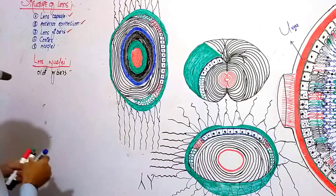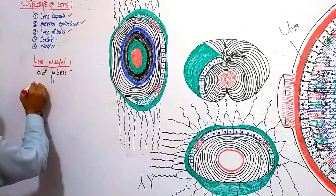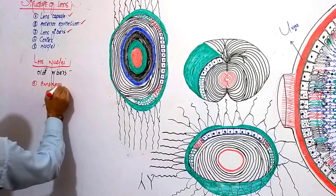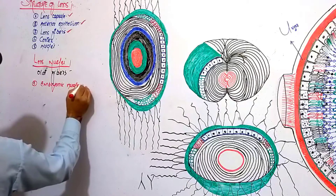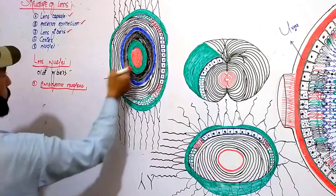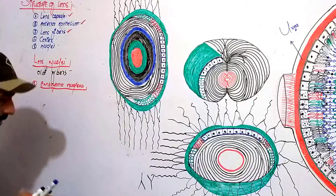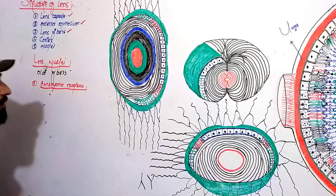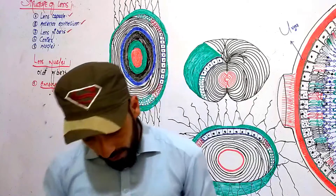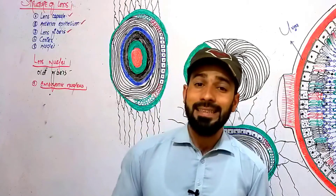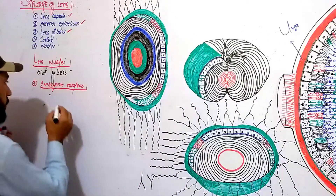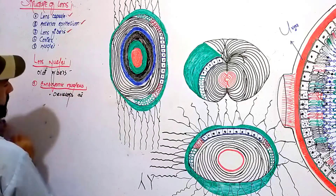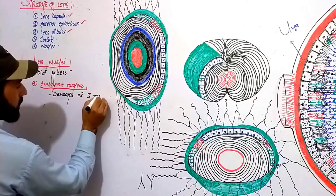The first group of nuclei is the embryonic nucleus, shown here in red. The embryonic nucleus starts developing at the third month of the gestational period.